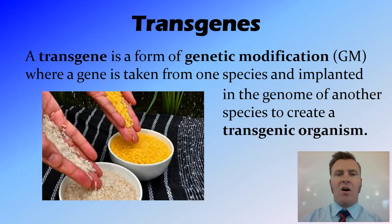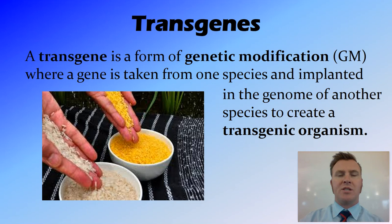A transgene is a genetic modification where a gene from one species is implanted into the genome of another species to create a transgenic organism. 'Trans' means across, and 'gene' refers to a section of DNA — so it's taking a section of DNA from one organism and putting it across the species barrier into another organism, where hopefully it will produce the same protein or enzyme that it produced in the original organism. We call these modified organisms transgenic organisms.